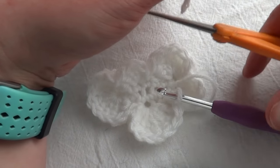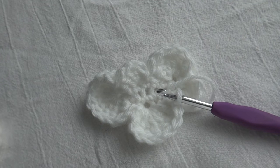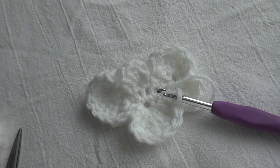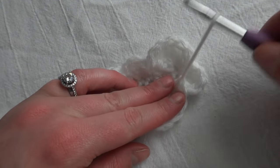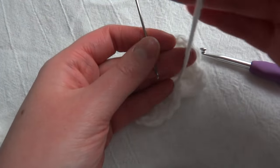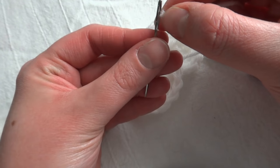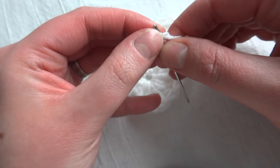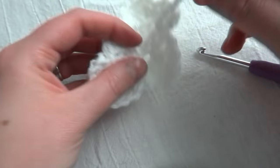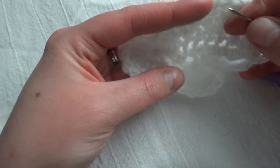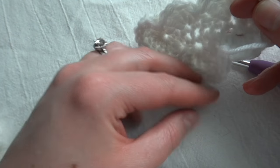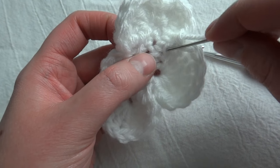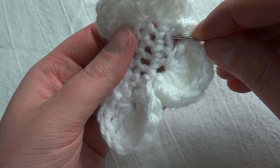So you'll trim your yarn and use your tapestry needle to weave in your ends. I also like to use my tapestry needle to kind of close some of the holes in the middle of the cloud. As you can see, there's some spaces. And so as you weave, you can kind of weave to close those up a little bit.